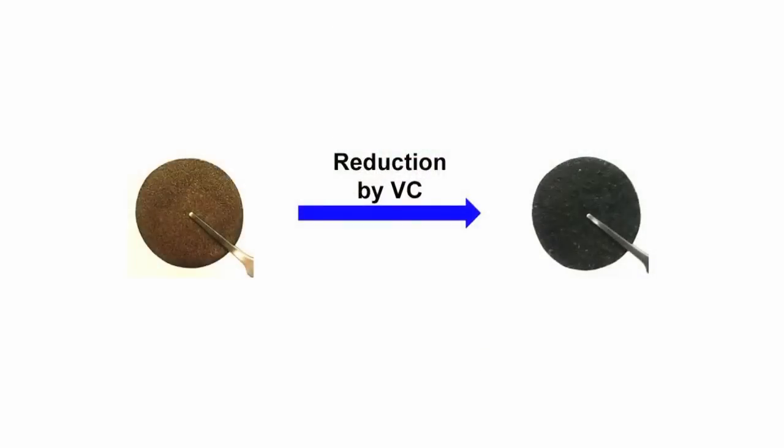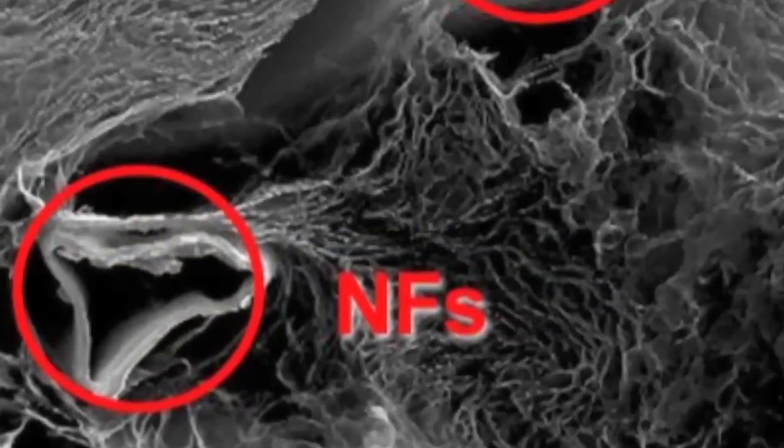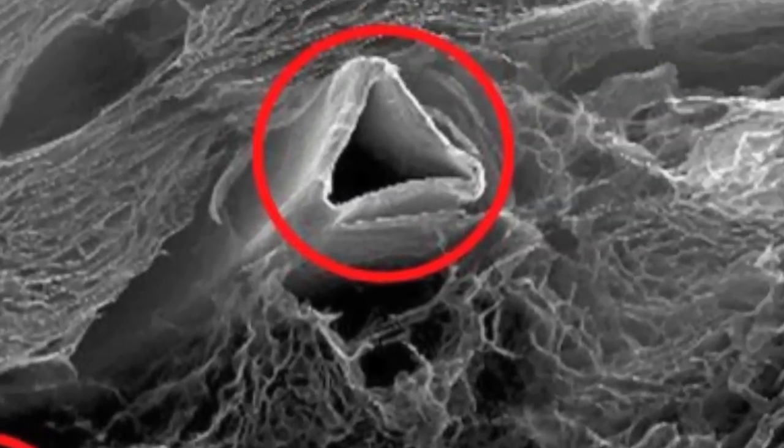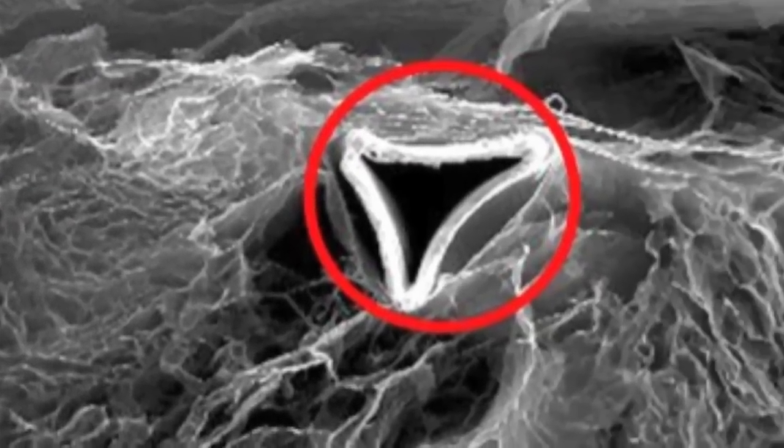Successive reduction by VC converts the graphene oxide suspension to reduced graphene oxide hydrogel. In this case, graphene hydrogel were separated into small pieces and each of them were surrounded by nickel framework.